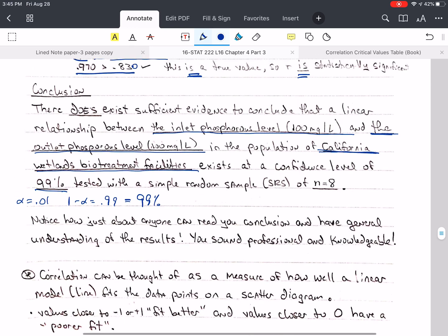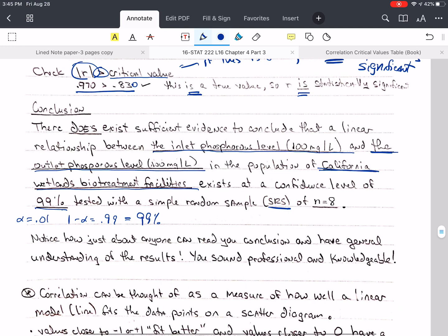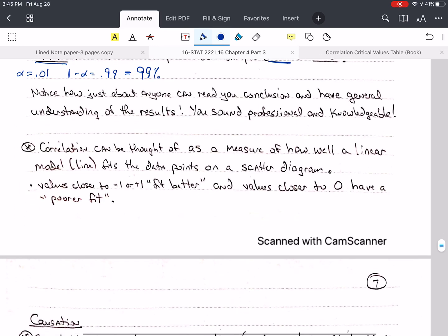And this is my confidence level. Tested with a simple random sample, or you can use SRS, of N equals 8. So doesn't that sound professional? Doesn't it make people, don't you think that whoever wrote this knows what they're talking about? It gives you confidence that what they're saying is true. So use a sentence like this and fill in the blanks and people will be impressed that you know statistics.